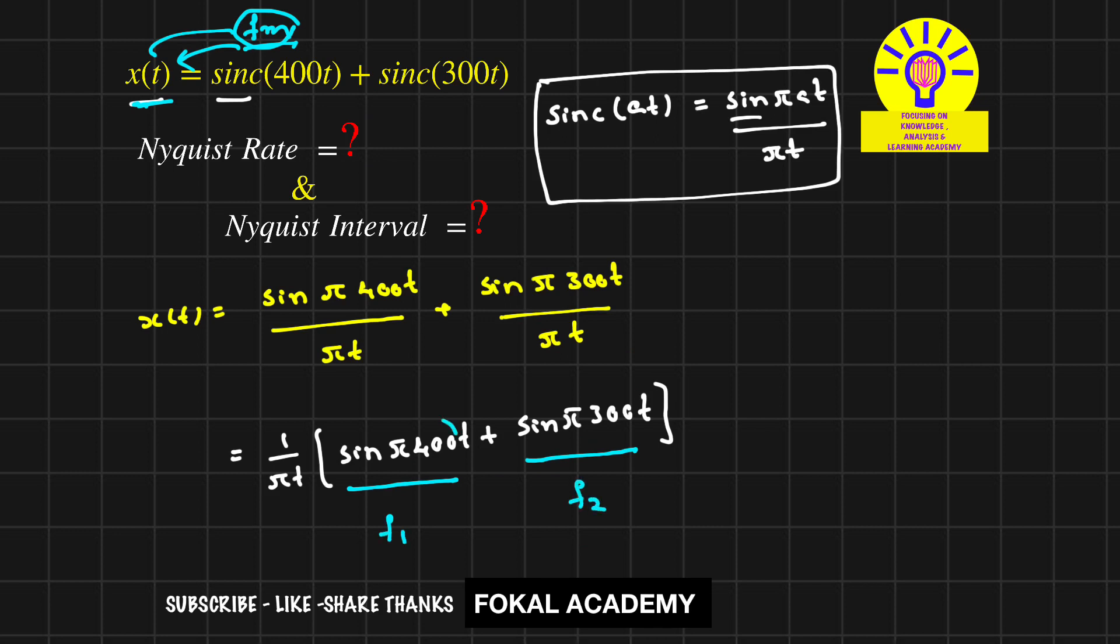Here we have omega, which is 2πf1 and 2πf2. By comparing, we get f1 = 200 Hz and f2 = 150 Hz.